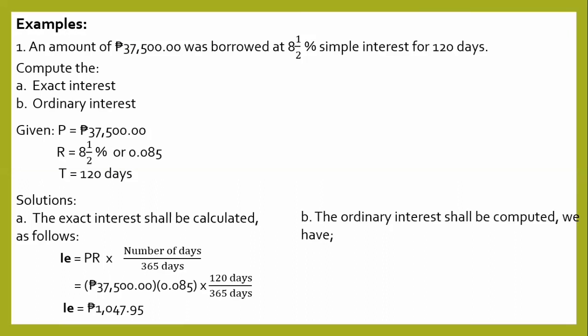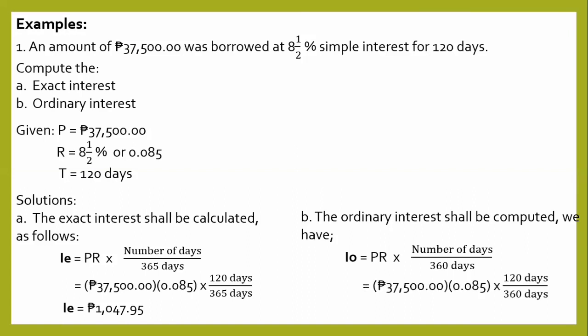For letter B, the ordinary interest is computed using: IO is equal to P times R times the given number of days, divided by 360. Substituting: 37,500 times 0.085 times 120, divided by 360. The ordinary interest IO is equal to 1,062 pesos and 50 centavos.